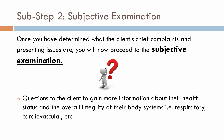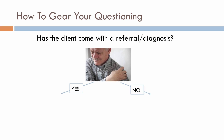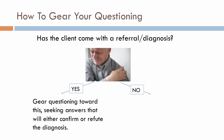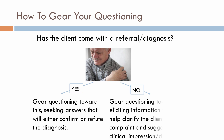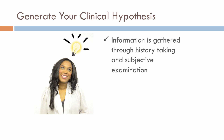At this point, if the client has not come in with a referral or diagnosis, you should already be determining your clinical hypothesis based on their answers. If they have come with a referral or diagnosis, gear your questioning toward confirming or refuting it. If they haven't, gear your questioning toward clarifying the chief complaint and suggesting a clinical impression. Once you have enough information, you can more accurately formulate your clinical hypothesis.